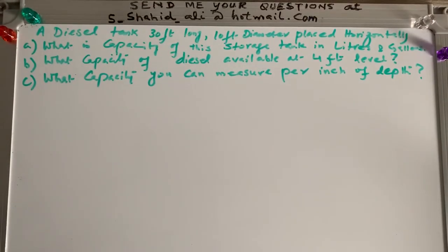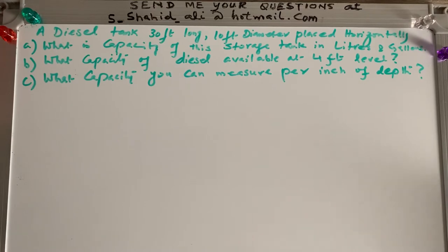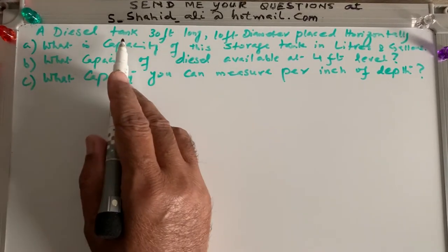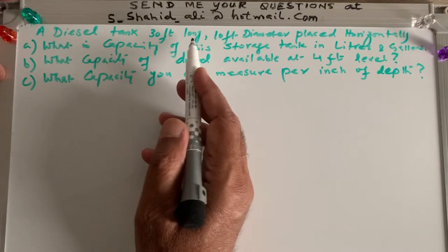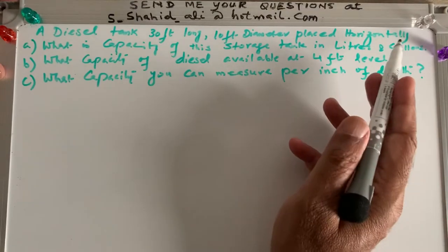Bismillah ar-Rahman ar-Rahim. Welcome to my channel Learn Math with Sayyid Ali. So today we are doing a question on volume of the cylinder and this has been sent to my email by one of my remote students. The question is: a diesel tank 30 feet long, 10 feet diameter, placed horizontally.